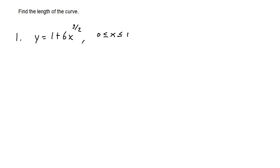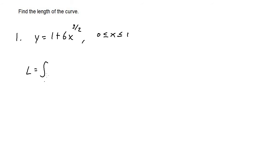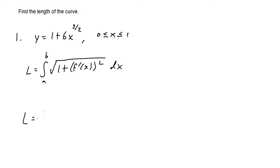For this next set of problems, let's find the length of the curve. For number 1, we have y equals 1 plus 6x to the 3 halves power, with x bounds from 0 to 1. Since we have a function in terms of x with x bounds, the formula is the integral from a to b of the square root of 1 plus f prime of x squared, times dx. So we set up the integral from 0 to 1 of the square root of 1 plus...